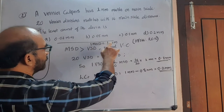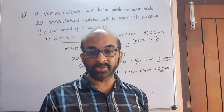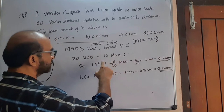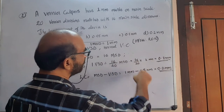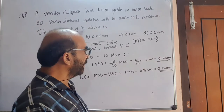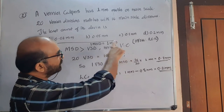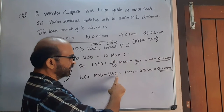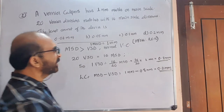One main scale division is 1 millimeter. Here, main scale division is greater than vernier scale division. Given: 20 vernier scale divisions equals 16 main scale divisions. So one vernier scale division equals 16 by 20 MSD, which is 16 by 20 into 1 — that is 0.8 millimeter. Now, least count: this is a normal vernier scale, so main scale division minus vernier scale division equals 1 millimeter minus 0.8 millimeter equals 0.2 millimeter. The answer is D.